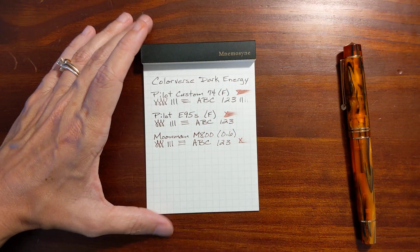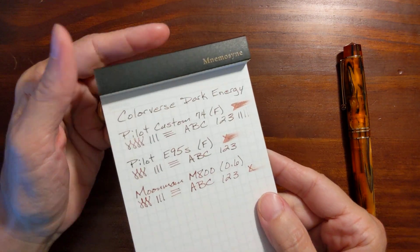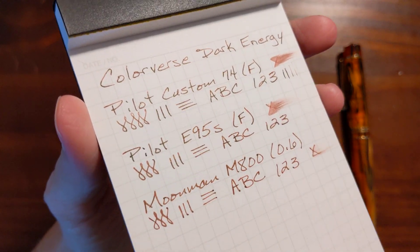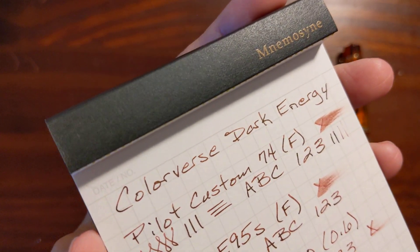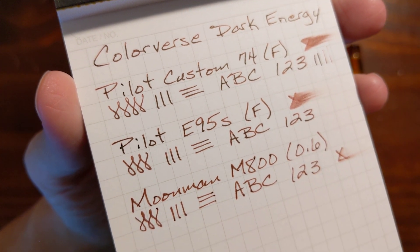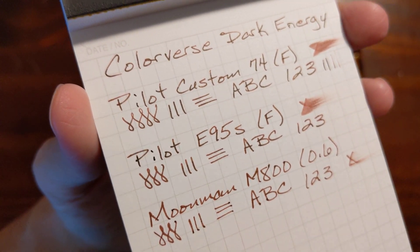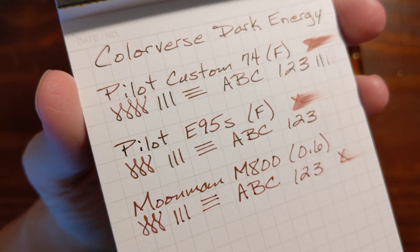And I don't think we're going to see any sheen on this Maruman Mnemosyne, it behaves very similarly to Rhodia. But I am seeing, oh I just really like it, seeing the loop-de-loops in the Custom 74.